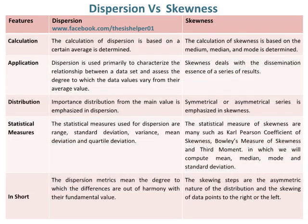The calculation of dispersion is based on a certain average that is determined, whereas the calculation of skewness is based on the mean, median, and mode that is determined.